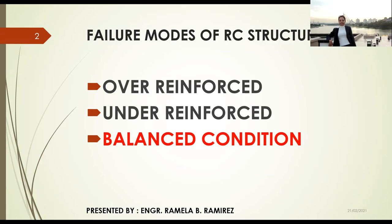When the beam is over-reinforced, the failure mode is sudden brittle failure. This should be carefully noted by any structural designer because the failure is initiated by the crushing of concrete followed by the disintegration of the compression zone, while a very large area of steel has not reached its yield point. To prevent brittle failure in an over-reinforced concrete structure, the steel reinforcement should yield first before the concrete strain reaches a value of 0.003.